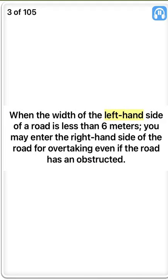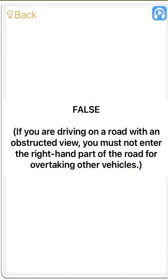When the width of the left-hand side of a road is less than 6 meters, you may enter the right-hand side of the road for overtaking even if the road has an obstructed view. False. If you are driving on a road with an obstructed view, you must not enter the right-hand part of the road for overtaking other vehicles.